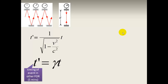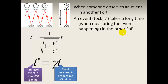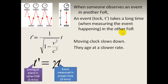T prime is the timing of this clock's tick as measured in the other frame of reference — say 5 minutes. T is what happens in my frame of reference; the clock is static relative to me, so this is proper time — say 3 minutes. So when someone observes an event in another frame of reference, they time 5 minutes while my clock reads 3 minutes. Moving clocks go slow: if somebody is moving relative to you, their clock is going slower, and they age at a slower rate.